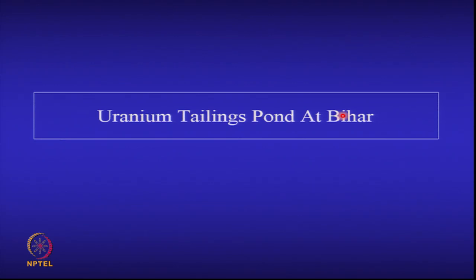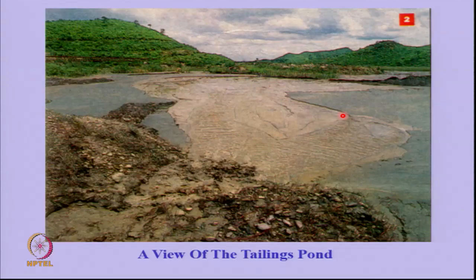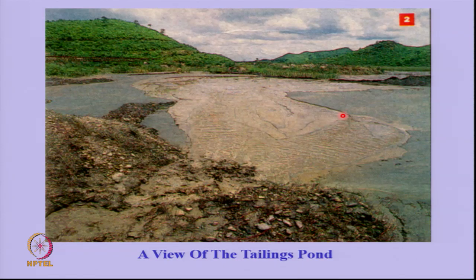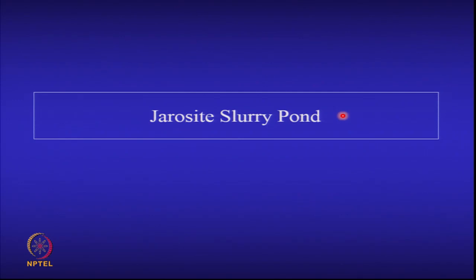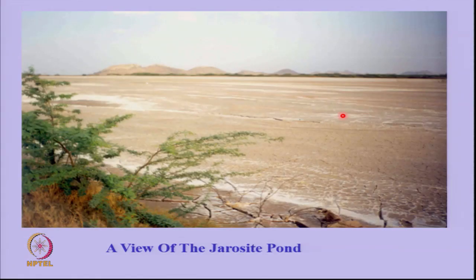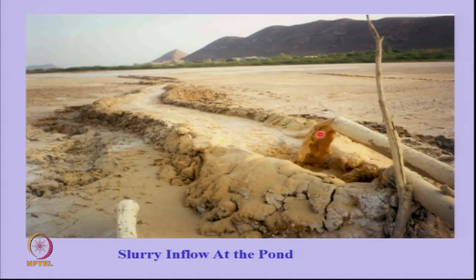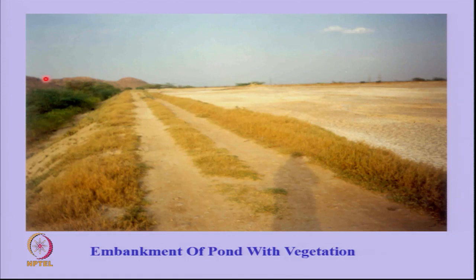This is a tailings pond for uranium tailings in Bihar — it was affecting the local population. It is not only mine tailings that come in slurry form; there is also a process called mineral extraction which releases a slurry known as jarosite. This jarosite pond shows yellowish material — it is a hazardous waste. The waste comes in as slurry and is decanted. It has a liner and a cover, but the vegetation outside is being affected by the constituents of the slurry water, drying it up.